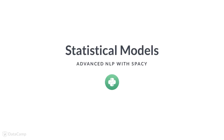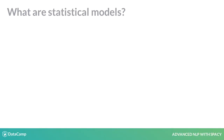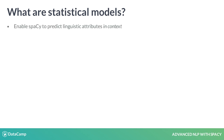Let's add some more power to the NLP object. In this video, you'll learn about spaCy's statistical models. Some of the most interesting things you can analyze are context-specific — for example, whether a word is a verb or whether a span of text is a person name. Statistical models enable spaCy to make predictions in context. This usually includes part-of-speech tags, syntactic dependencies, and named entities.